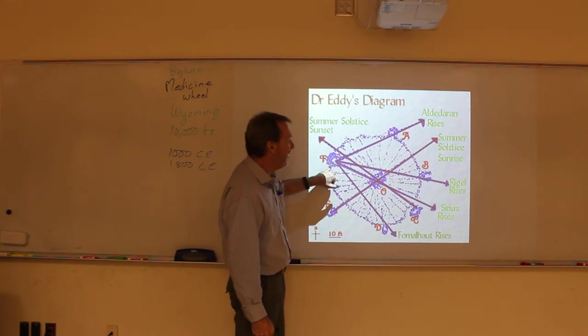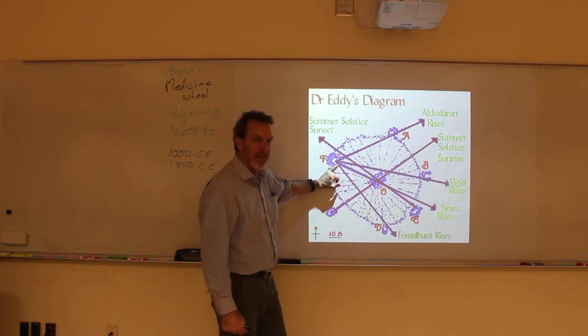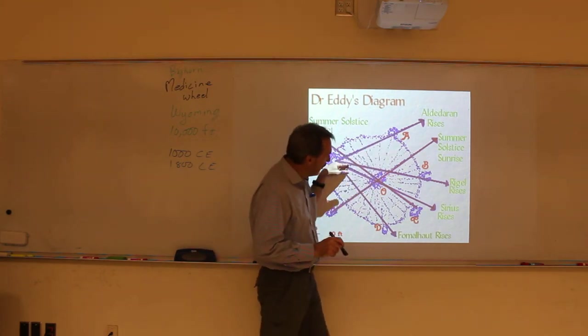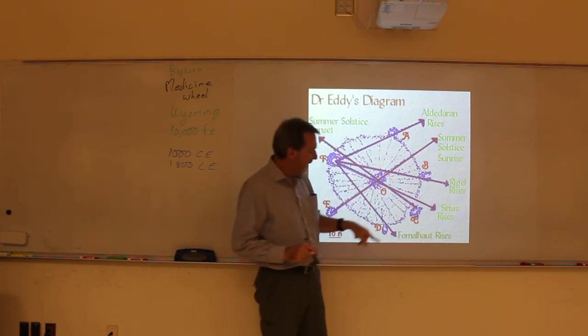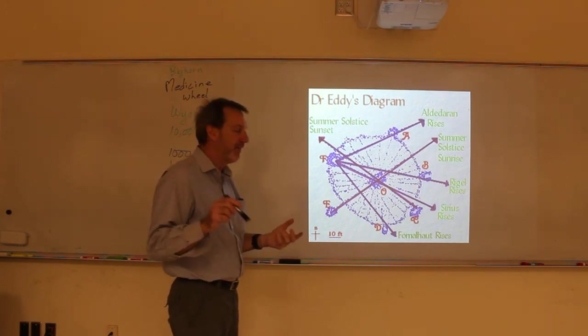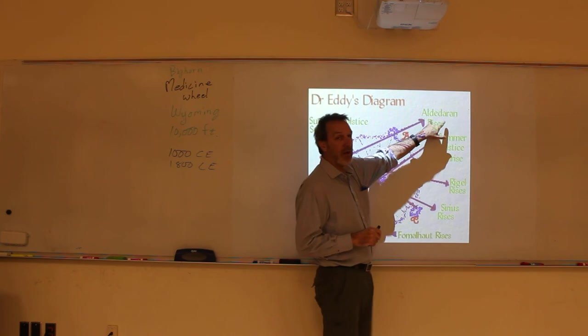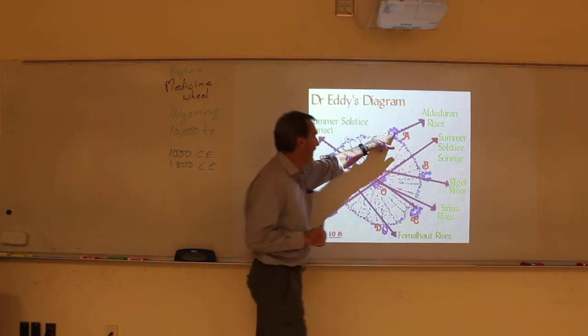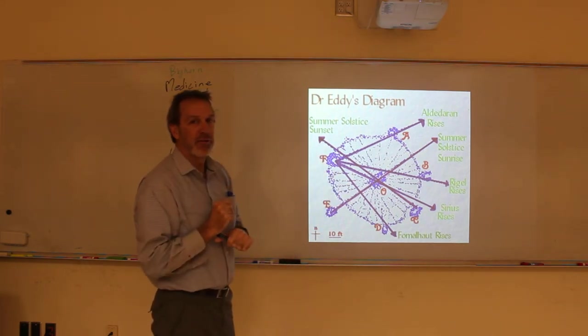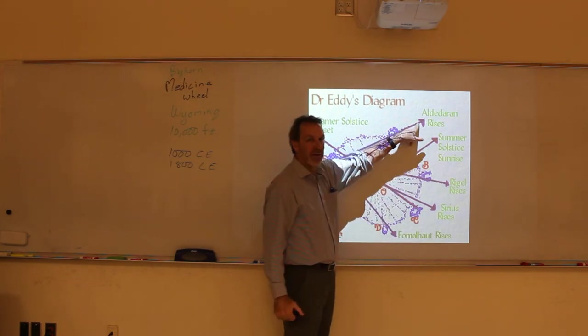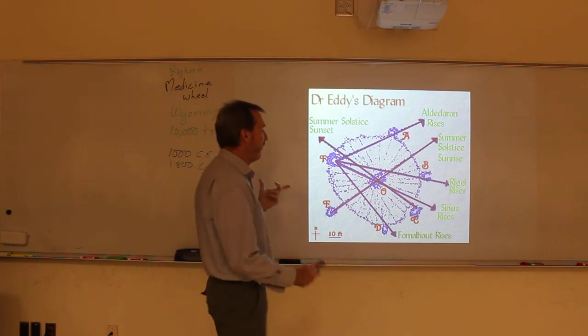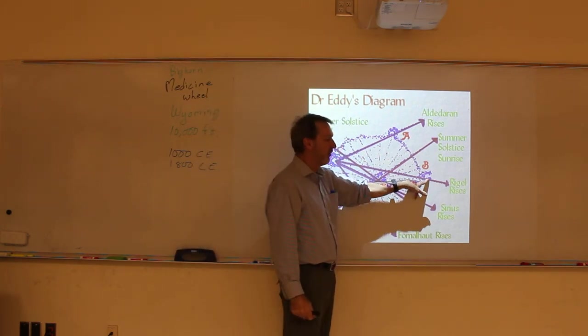From this one on the inside, that's where they think the viewing position was. From that viewing position, you would look out through the other ones to see if there were significant alignments. Now, are these all significant? I don't know, because if you pick any point with a few degrees, over the year you'll probably find at least one bright star that rises there. Aldebaran is a very bright star in Constellation Taurus, and it rises here. If you look through here, Rigel rises here in Constellation Orion.